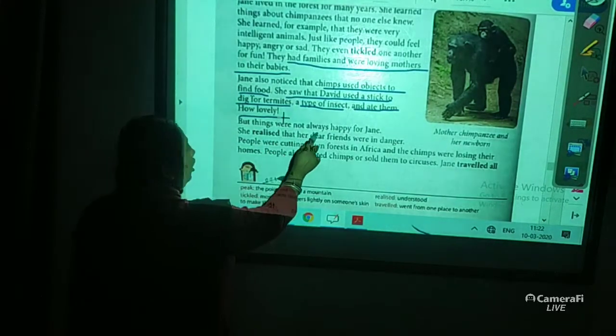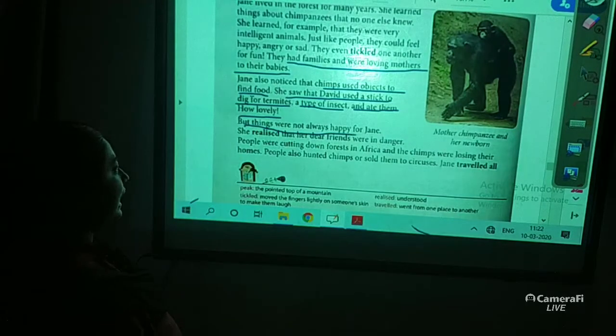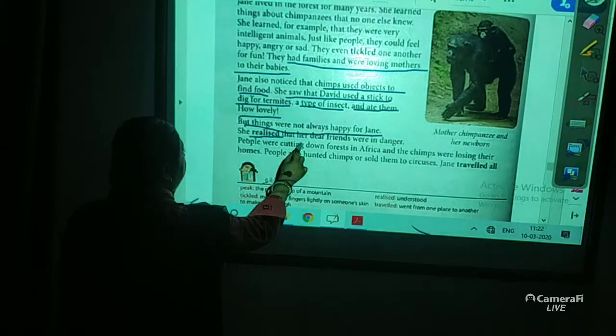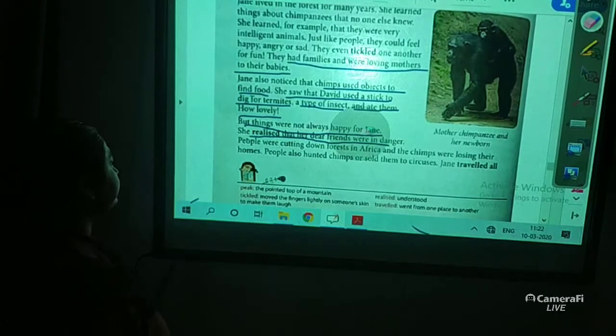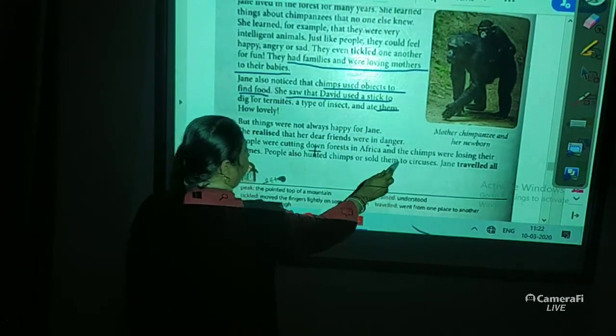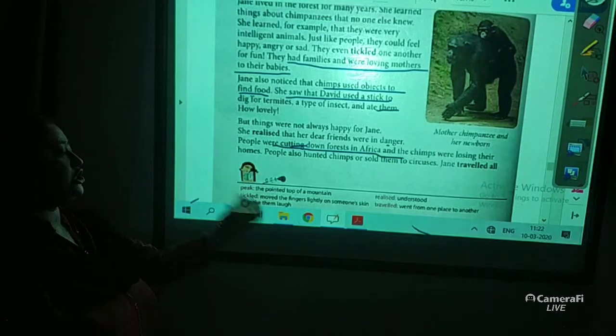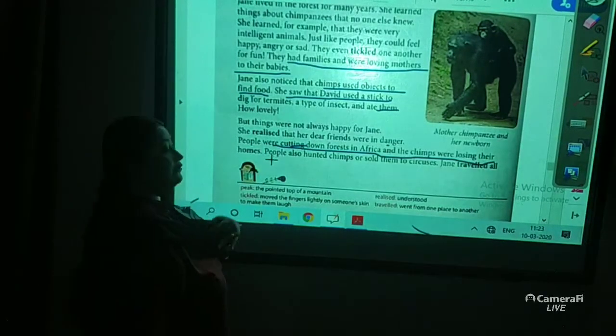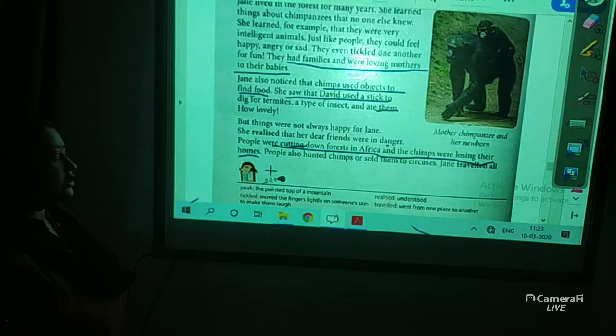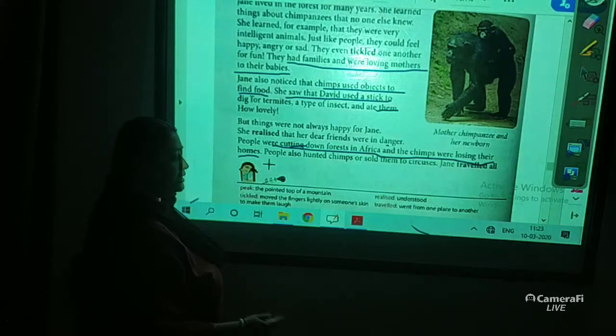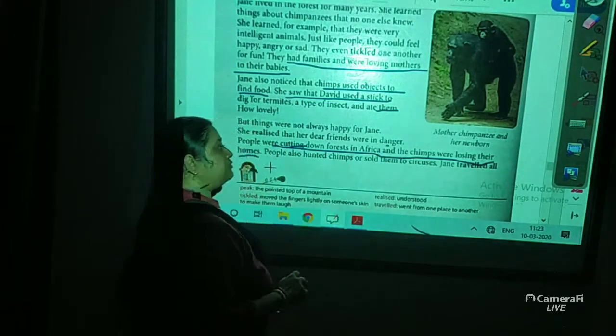But things were not always happy for Jane. Things changed. She realized that her dear friends were in danger. People were cutting down forests in Africa and chimps were losing their homes. If they cut down trees, then where will the chimpanzees live? They live on the trees in the forest. So it is very dangerous.